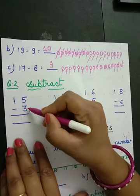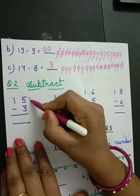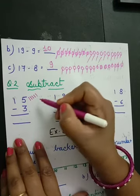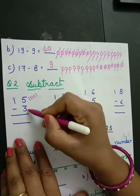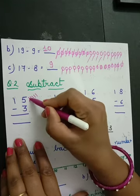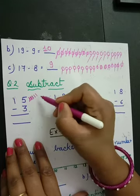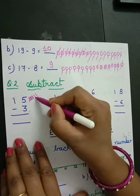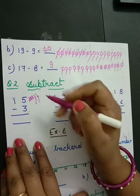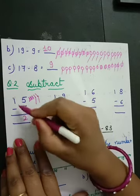Now question number two: subtract. Five minus three — draw 5 lines and cut 3: 1, 2, 3. How many lines remain? Two. Got it all of you?